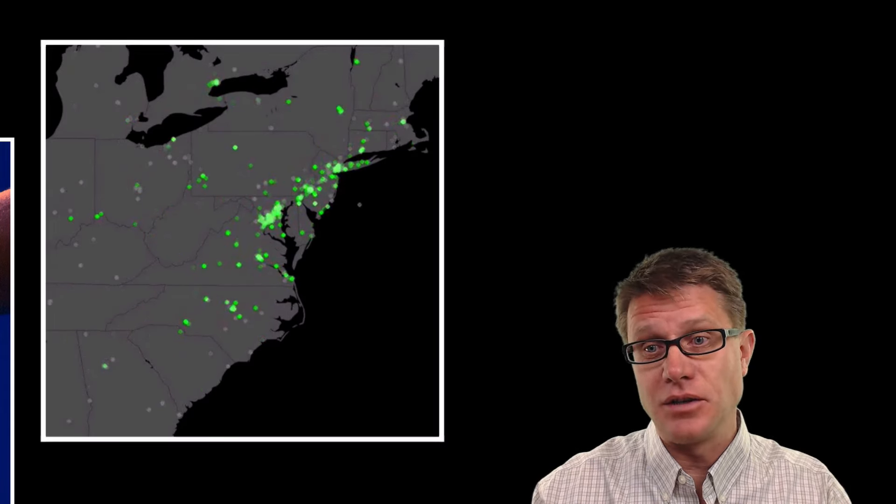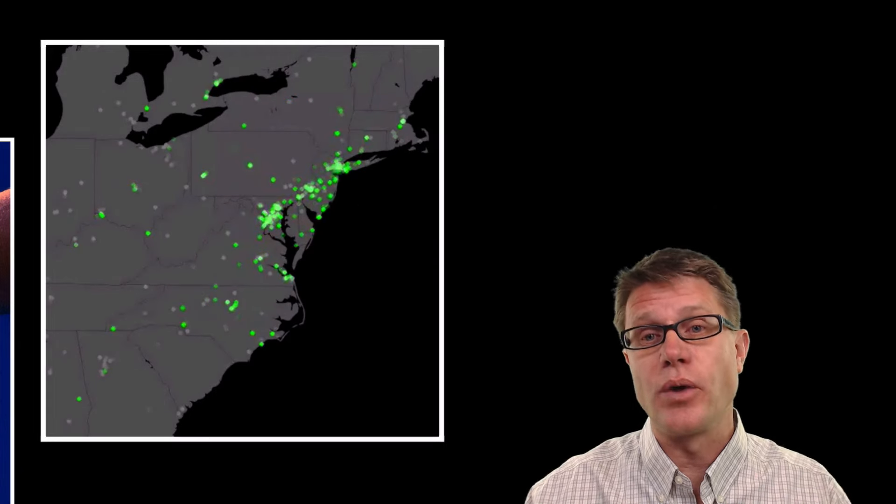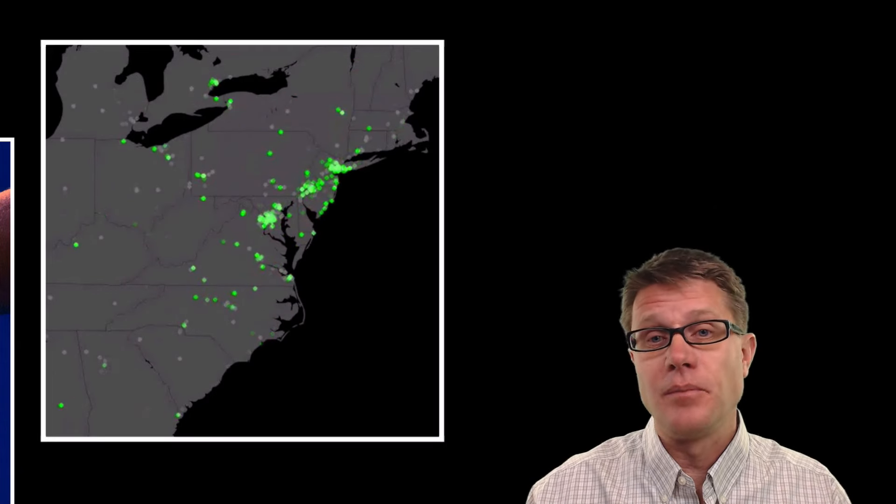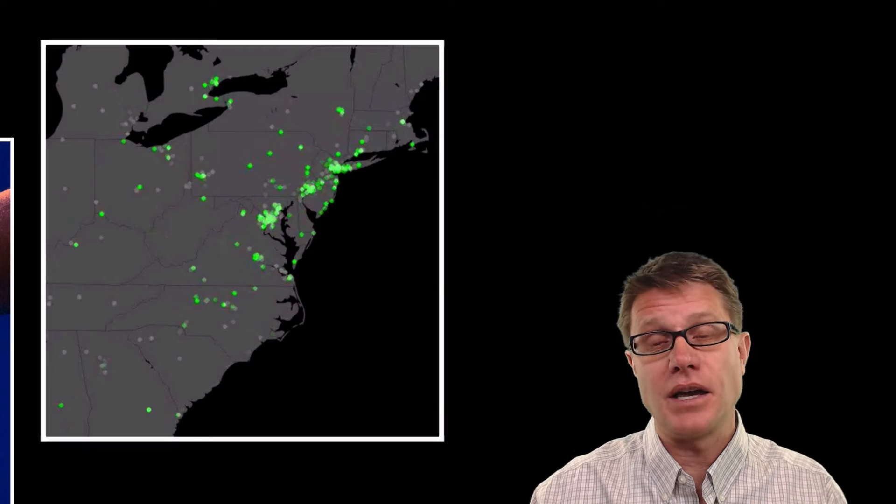And so you can see the seismic waves are actually moving out. You can trace where the earthquake went. Now what is interesting is that Twitter uses electromagnetic rays.